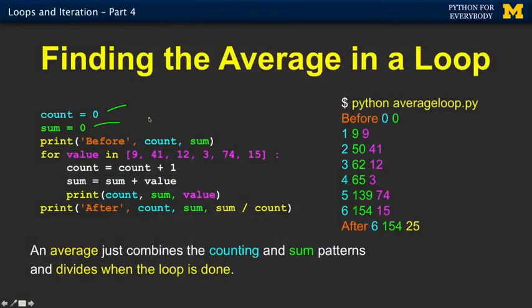And of course we can do this with an average. So now we're going to have a counter which we set to zero, and a running total which we set to zero in the variable sum. We're going to print out 0, 0 — so the count and the total are zero. We run through. Each time through we add one — so it's going to be one, two, three, four, five, six each time through. Then we have sum equals sum plus value, giving us 9, 50, 62, 65, 139, 154.